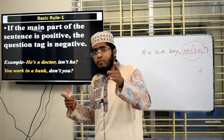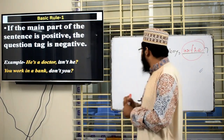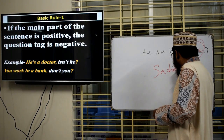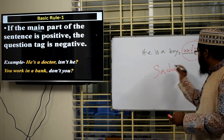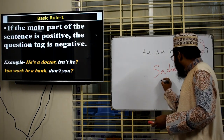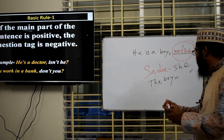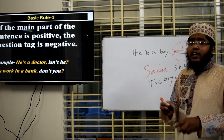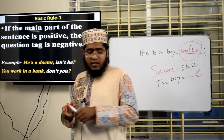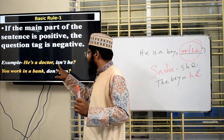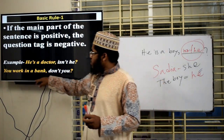Remember, in tag questions, a pronoun will always be used as the subject. If you get a name like Sadia — a girl's name — you use 'she'. If you get 'the boy', you use 'he'. So for 'He is a doctor', the auxiliary is 'is', so the tag is 'isn't he?'